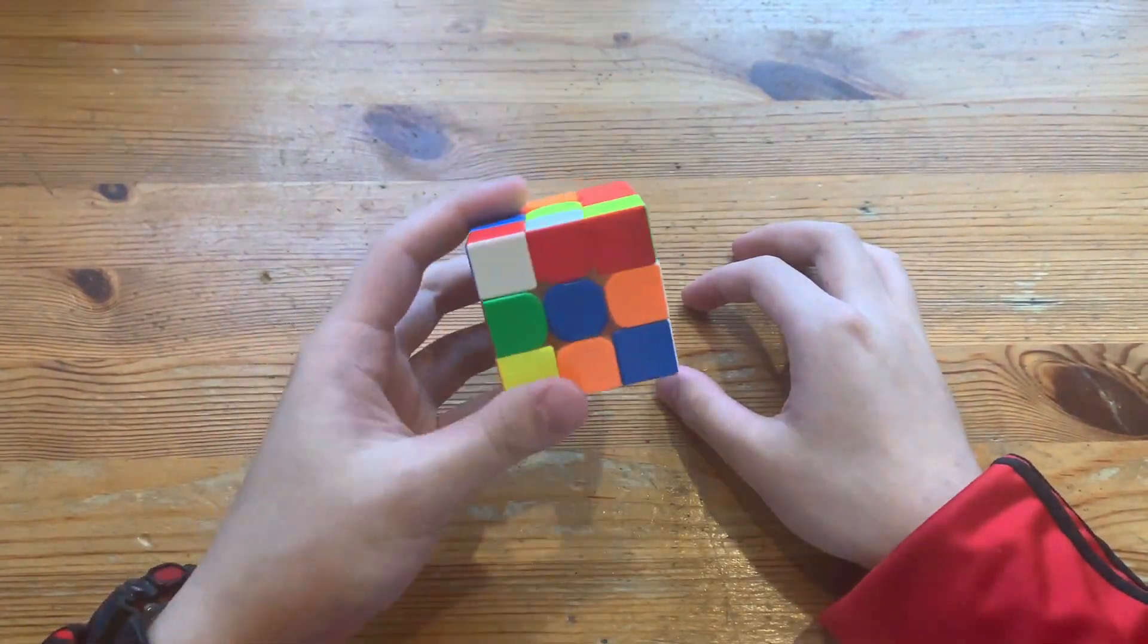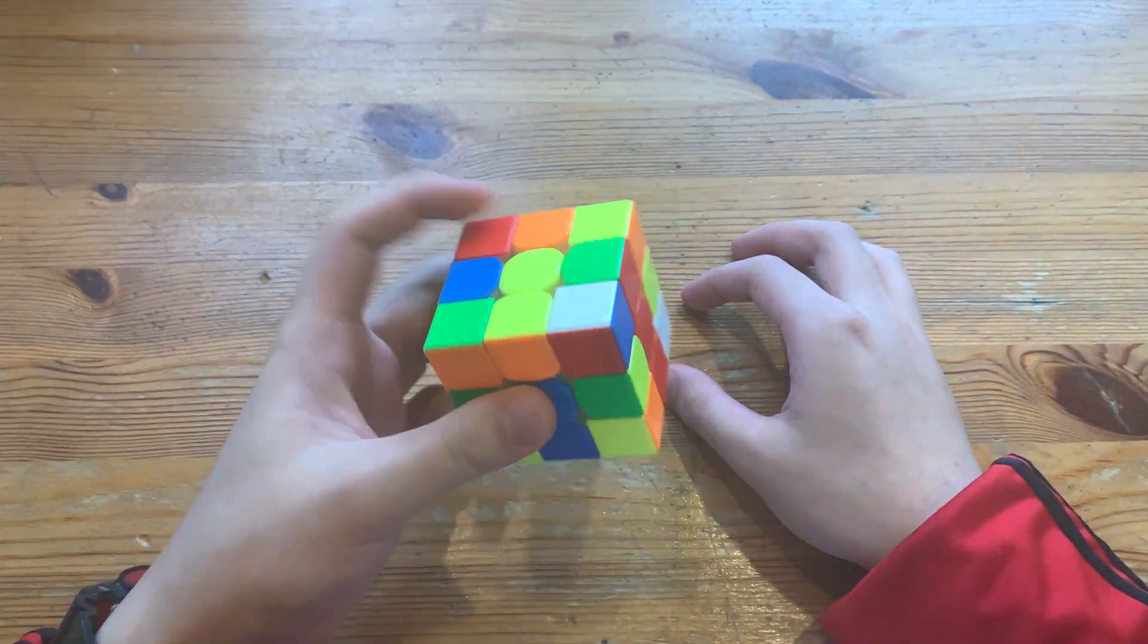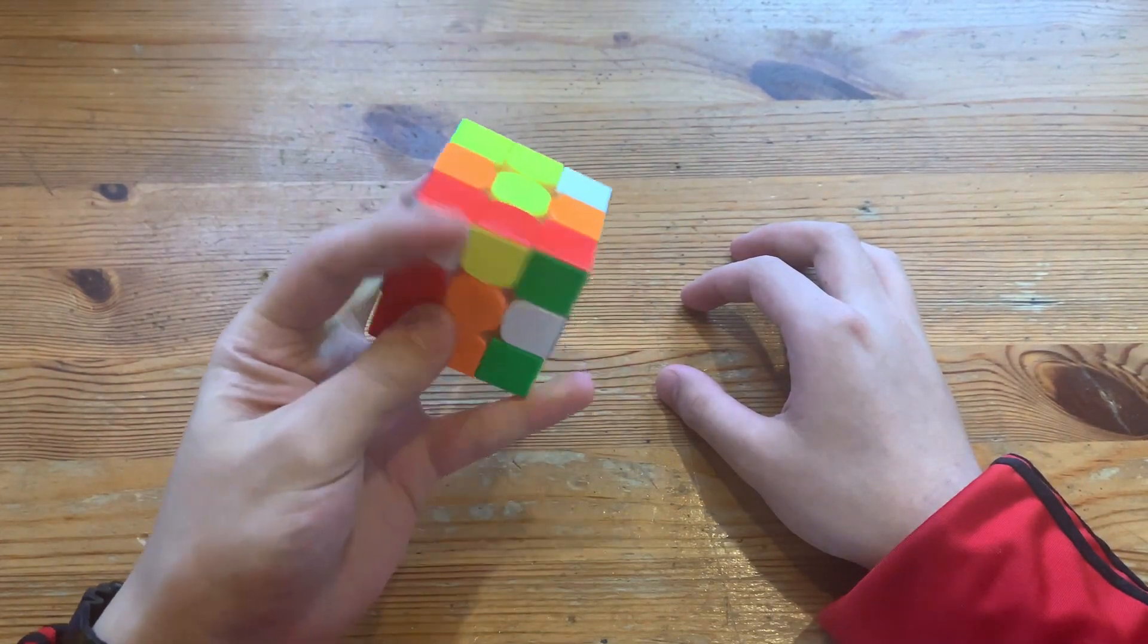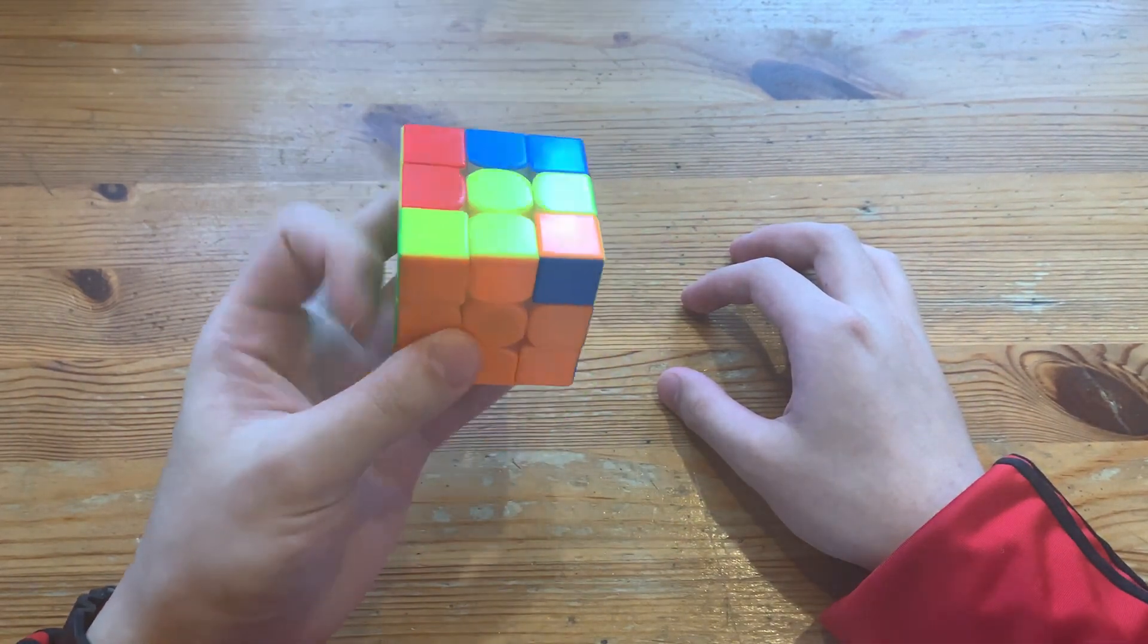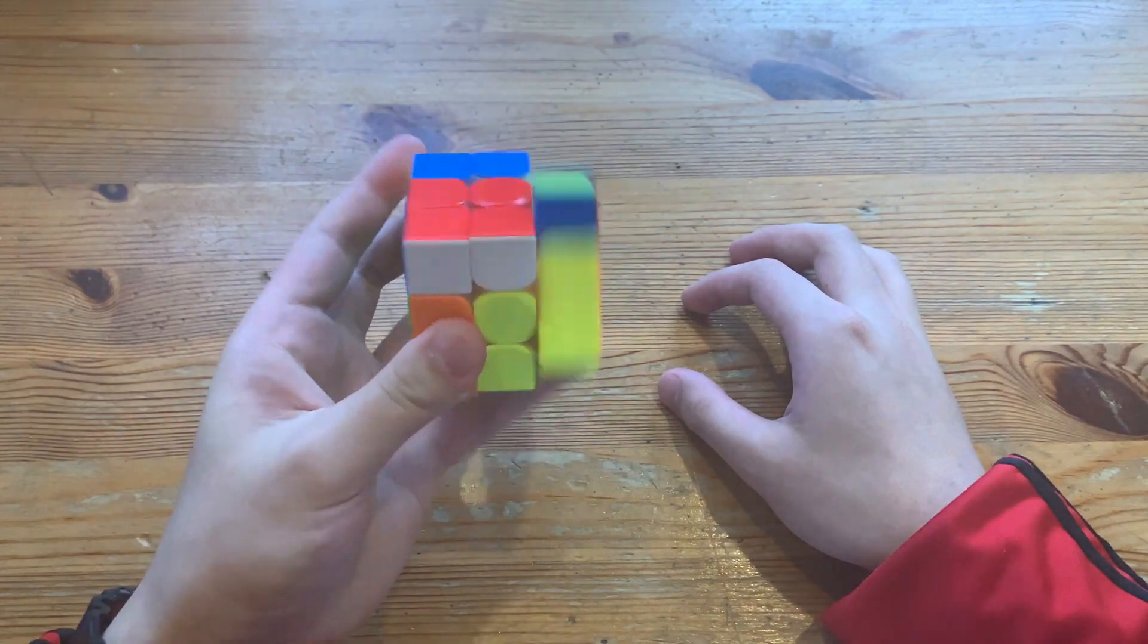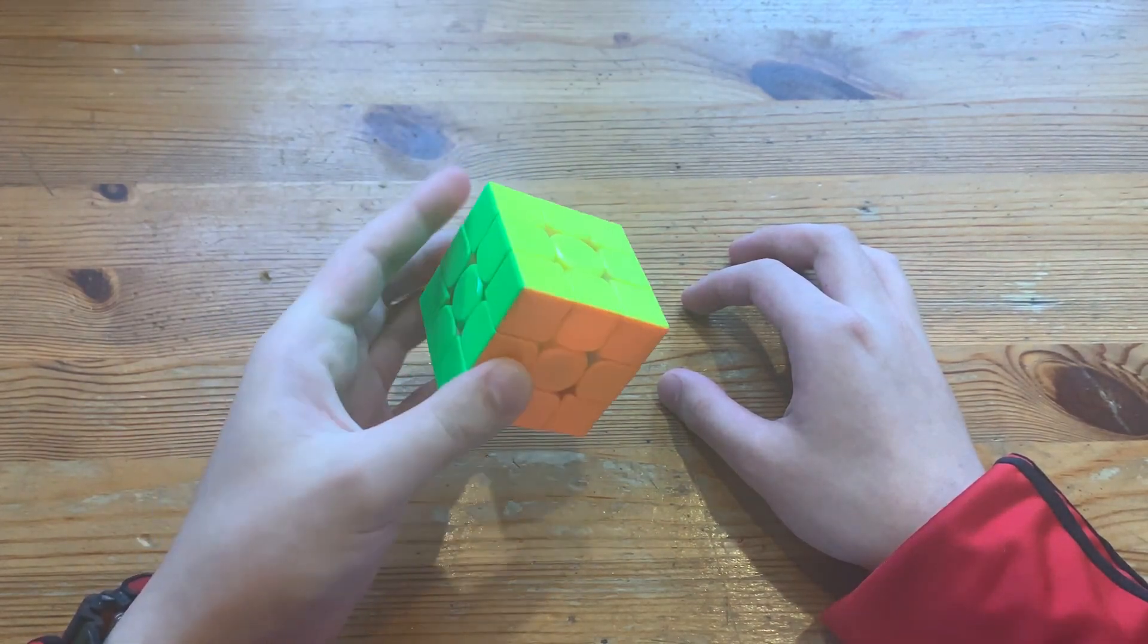So X2 cross, first pair, and then second pair, third pair, and then fourth pair. He did a U U instead of U prime U prime, and then he did a U prime U prime U prime, and then PLL skip into AUF.